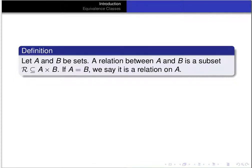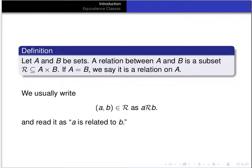Let's recall some definitions. A relation between a set A and a set B is simply a subset of the Cartesian product A cross B. It's a set of ordered pairs where the first element is from A and the second element is from B. If the two sets are the same, so if A equals B and R is just a subset of A cross A, then we say that the relation is a relation on A.